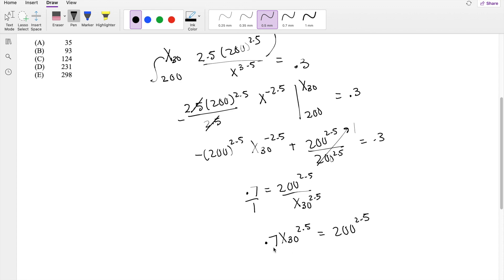So then dividing this by 0.7, X_30 is equal to the 2.5 root of this number, which is equal to 230.669.